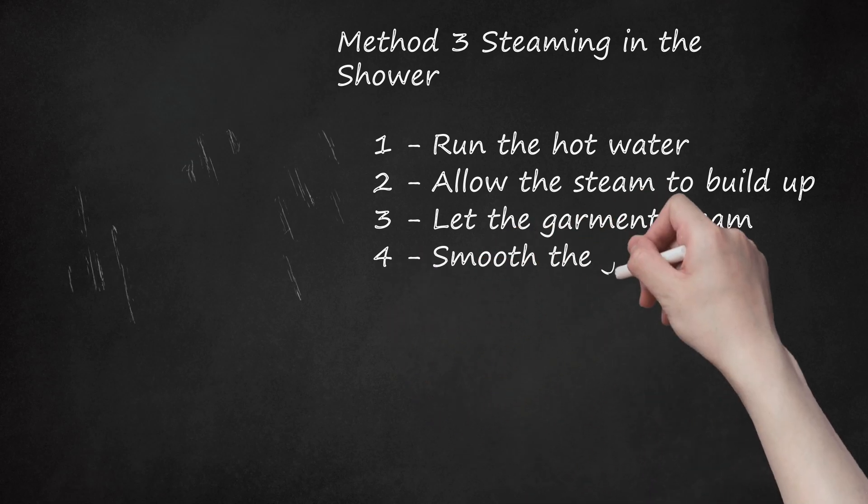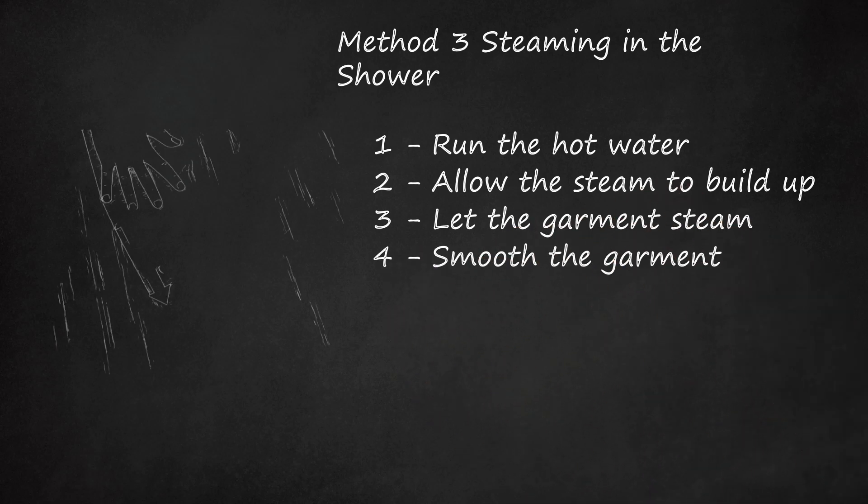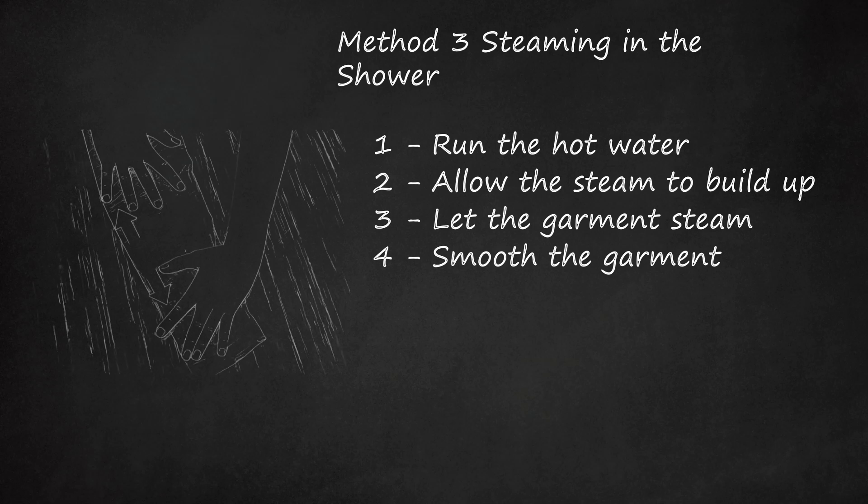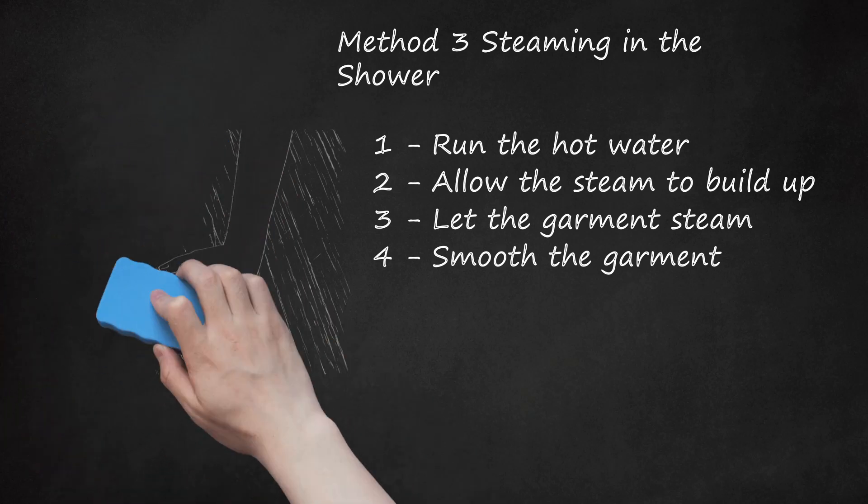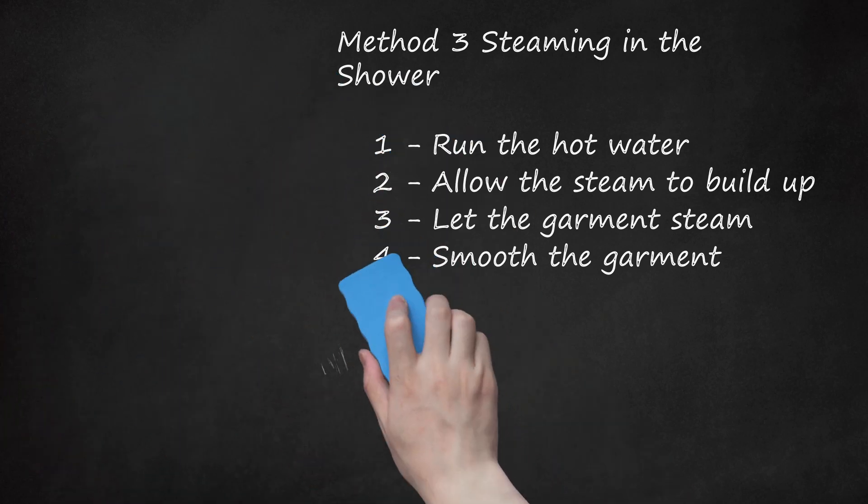Step 4: Smooth the Garment. When you're done steaming, lay out the garment on a flat surface and smooth it out with your hands. Pull stubborn wrinkles gently to relax them. Allow the leather to cool on the flat surface before moving or wearing it. This helps set the smooth leather and prevents re-wrinkling.